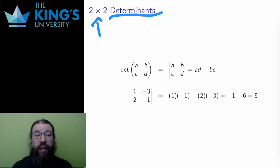For a 2x2 matrix ABCD, the determinant is AD minus BC. The determinant is often written as a matrix with bars instead of parentheses as a shorthand notation.